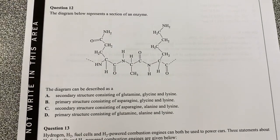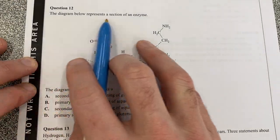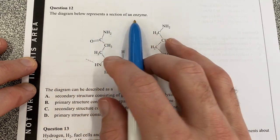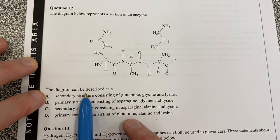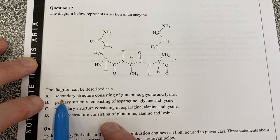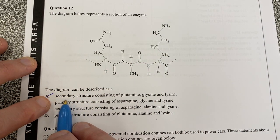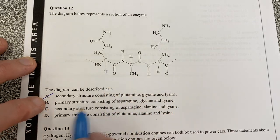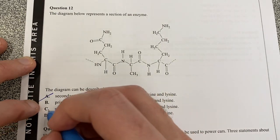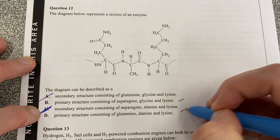Question number 12. What have we got here? The diagram below represents a section of an enzyme. This diagram can be described as the secondary structure. No, it's not a secondary structure because that should be showing hydrogen bonds between amide linkages. Primary structure is pretty good so it can cross out second structure there. It's either this one or this one.